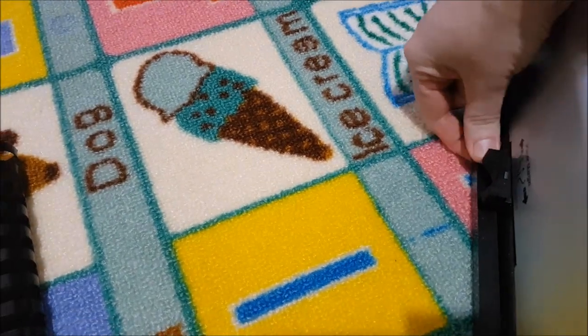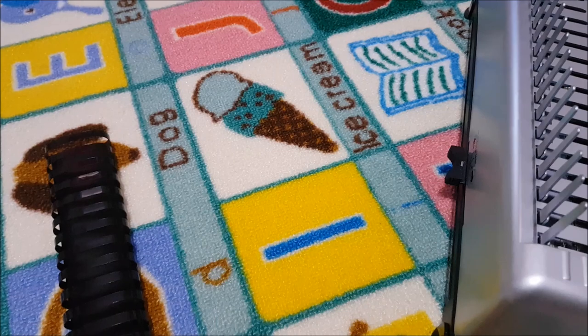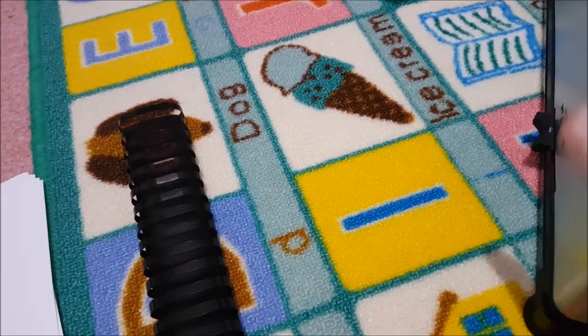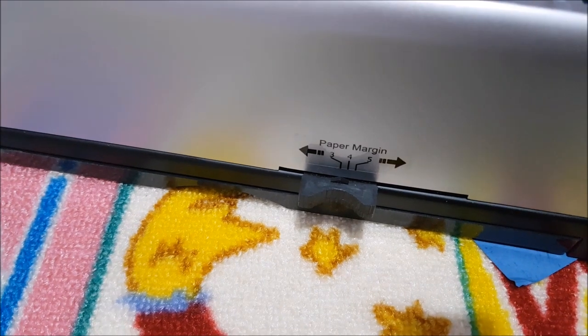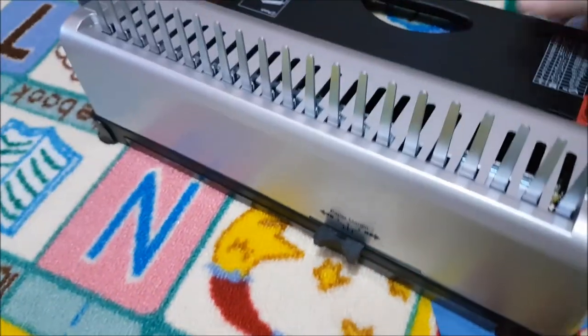It also has a tray at the back to gather all of your hole punchings which you can pull out and throw away or recycle. And then it also has a margin indicator - we've got a 3 inch, 4 inch, and a 5 inch margin indicator.